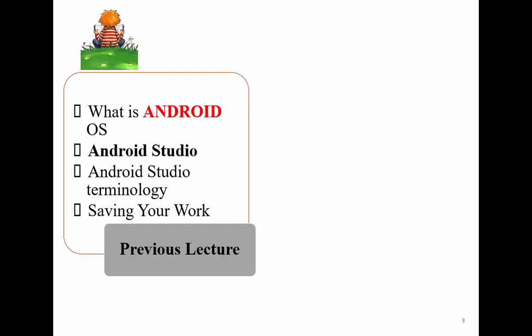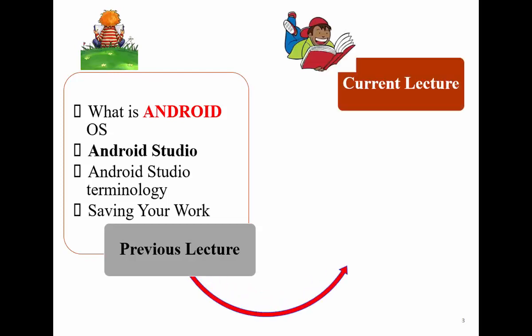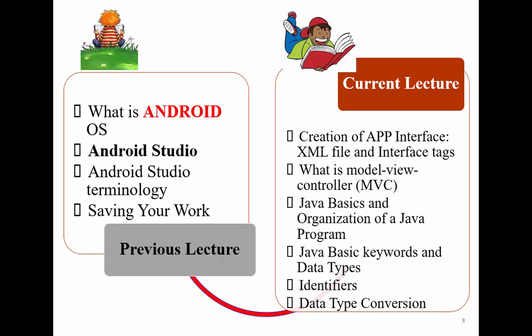We discussed Android Studio terminology, and today we're going to cover more Android terminology — how to save your work. I encourage you to see the slides. After you demonstrate your lab to the TA and get your grade, you have to submit your work individually to the system called Web Submit. You upload the necessary files — not the complete app. Today we will discuss how to create the app interface using XML files and interface tags.